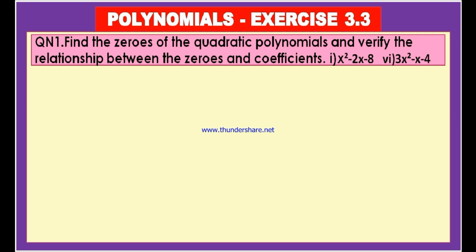The first quadratic polynomial given is x squared minus 2x minus 8. We have to find the zeros for this quadratic polynomial. If we consider the first zero as alpha and the second zero as beta, then alpha plus beta, the sum of the zeros, is equal to minus b by a. And the product of the zeros, alpha into beta, is equal to c by a. We have to verify those two relationships.